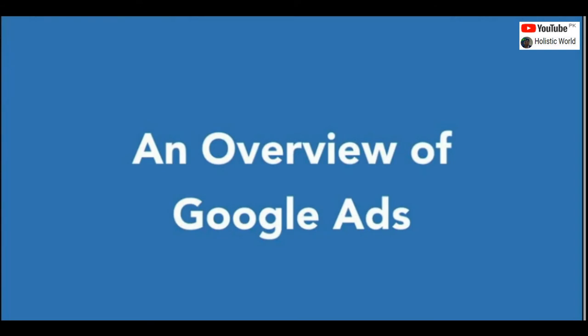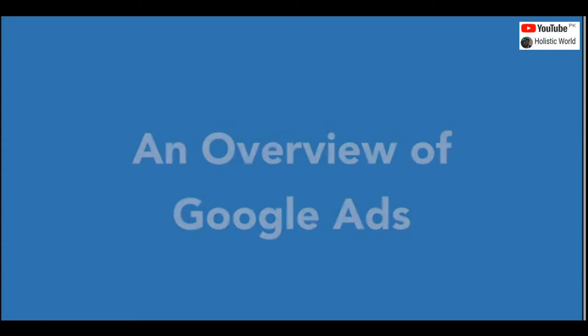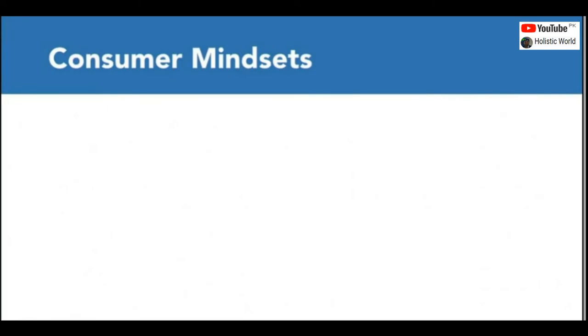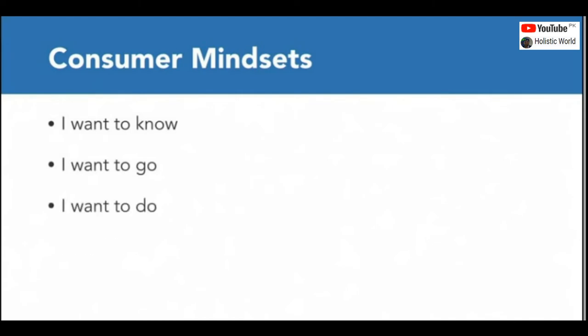Billions of times per day, people turn to Google to look up an answer to a question, discover a new place to visit, find solutions to their problems, and look for products to buy. And every time someone visits Google, they're likely in one of four mindsets: I want to know, I want to go, I want to do, and I want to buy.